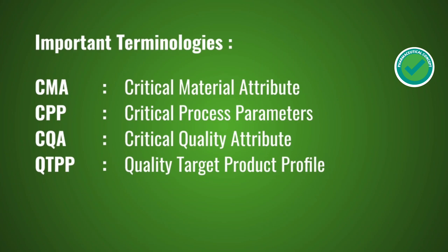Before starting this presentation, we will let you know about the important terminologies used in QbD. CMA stands for Critical Material Attributes, CPP for Critical Process Parameter, CQA for Critical Quality Attribute, and QTPP for Quality Target Product Profile.